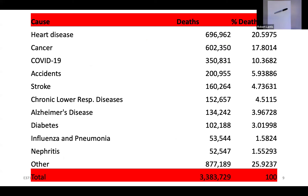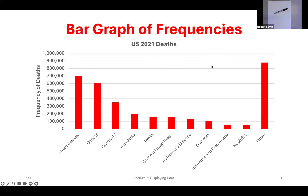Here's our original frequency distribution and percent frequency distribution for causes of death. I'll graph the frequencies with number of deaths on the Y-axis and the different categories on the X-axis. In 2021, I can very quickly see that the most deaths came from heart disease and cancer, with COVID-19 also being large. It kind of tapers off, with the catch-all 'other' category being the highest bar — representing many different types of deaths combined.